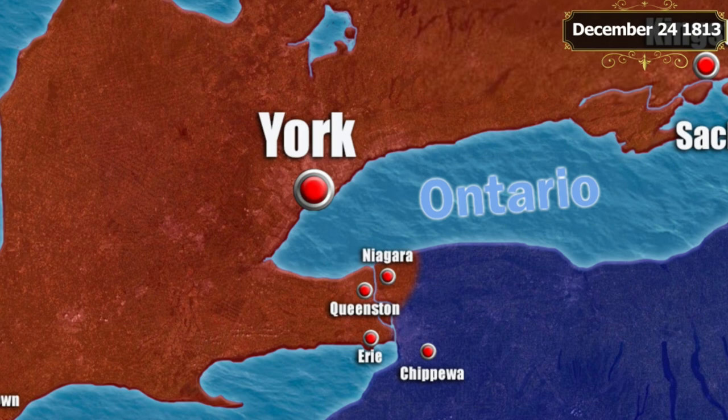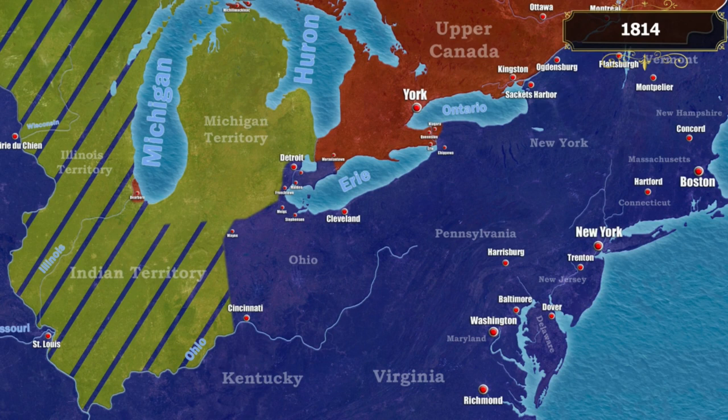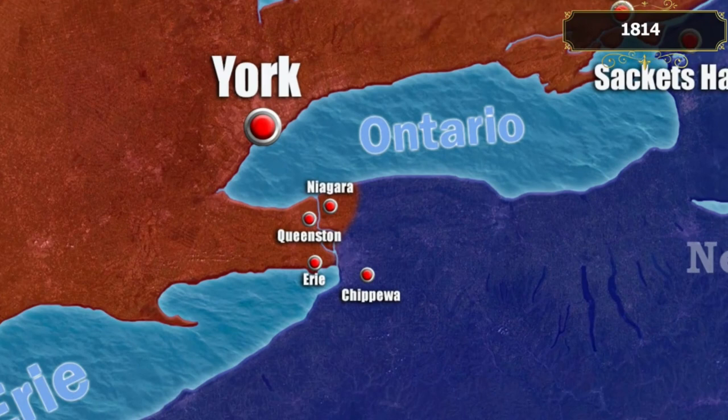In 1814, in response to the destruction of York, the British command planned a strike at the heart of the United States — the city of Washington. Since the war with Napoleonic France had ended by this time, the British were able to transfer part of their liberated forces to the American continent.